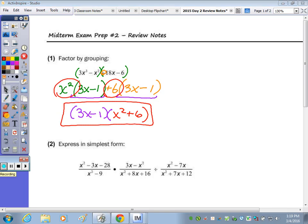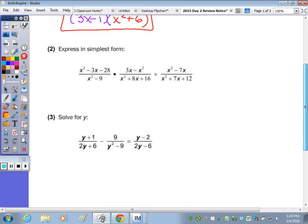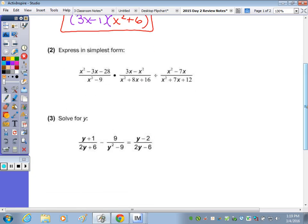Number 2, expressed in simplest form, when multiplying and dividing fractions, we factor and cancel. So let's start by factoring each of the expressions, and then when we get to the division sign, to divide, you actually do the, so we keep, change, flip.